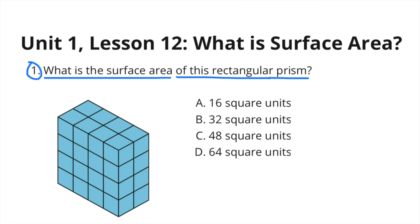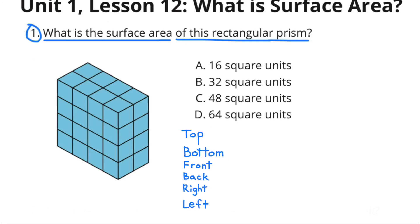Number 1. What is the surface area of this rectangular prism? There are 6 different surface areas: the top, the bottom, the front, the back, the right, and the left.